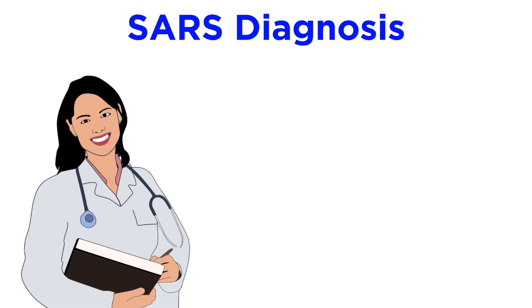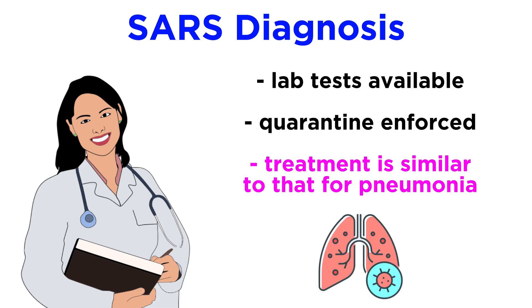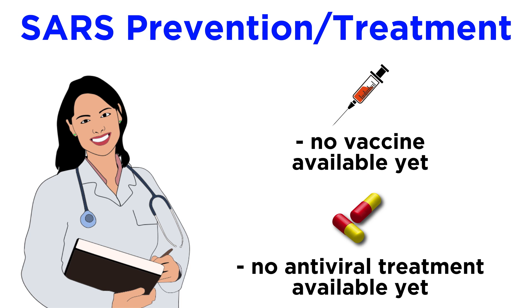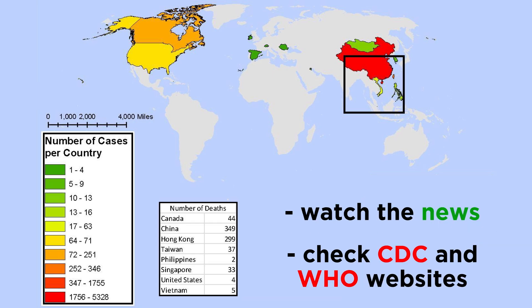When it comes to diagnosing a case of SARS, there are several lab tests that can be done, and strict quarantine is usually enforced to make sure a suspected case doesn't spread. For those that have confirmed cases of SARS, the treatment is the same as any serious case of pneumonia, except for maybe some extra safety precautions for the healthcare workers. There isn't a vaccine or approved antiviral treatment for SARS as of now, but a few are in the works. Since the initial global incident in 2003, there have only been a few instances of SARS in the world, all of which were contained and most of which were acquired in a laboratory setting. The best way to protect yourself against SARS is to pay attention to the news and check the CDC or WHO website.